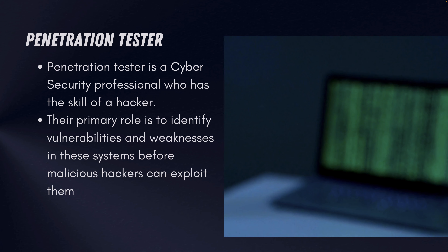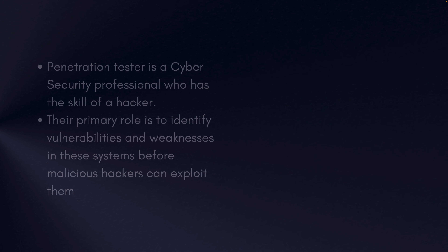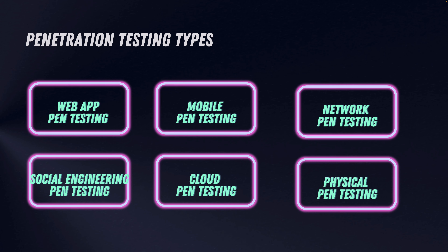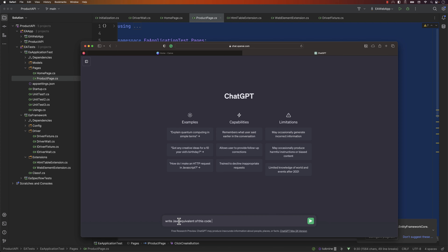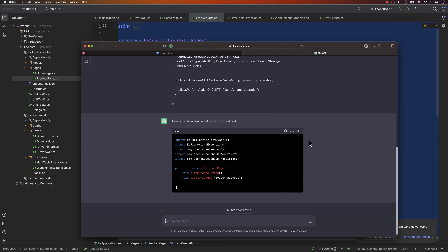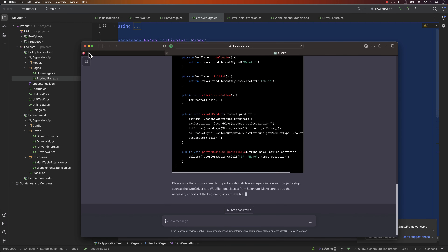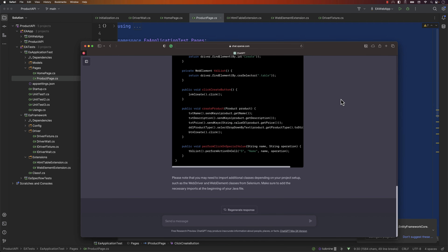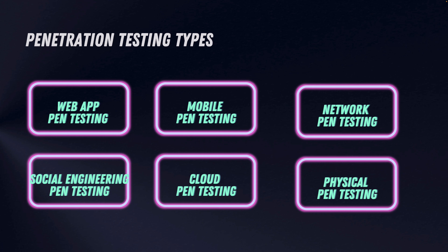Penetration testing is quite a wide subject and there are different types available: web app penetration testing, mobile penetration testing, network penetration testing, social engineering penetration testing, cloud penetration testing, and physical penetration testing. Because of the emergence of AI, there is also AI penetration testing. So these are the different types of testing available.